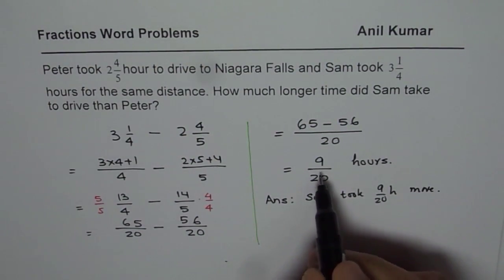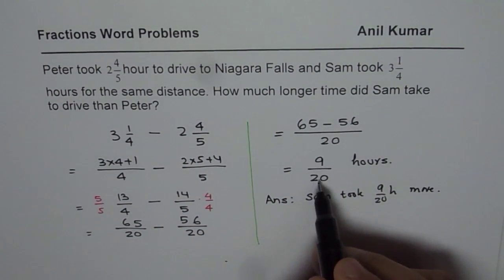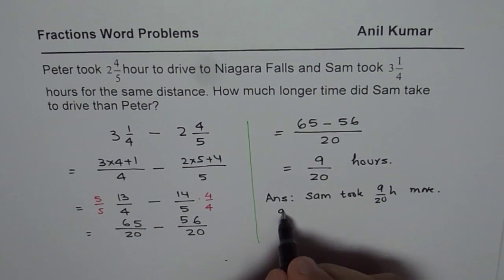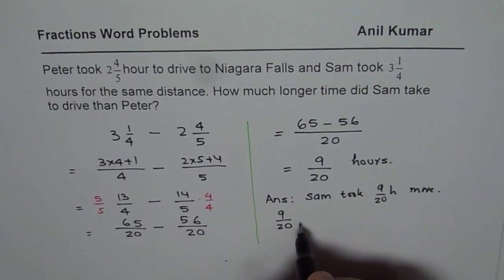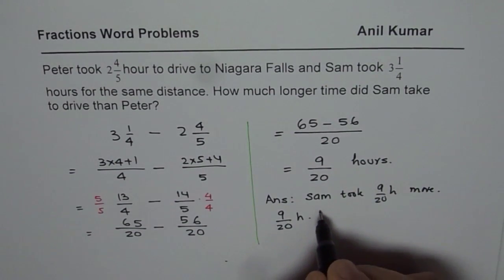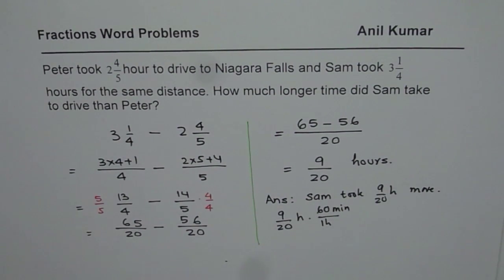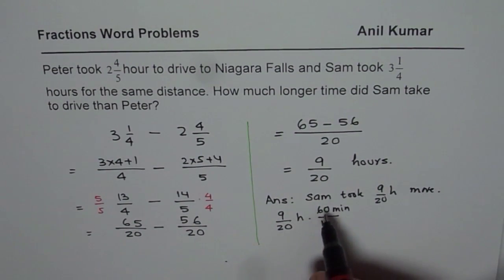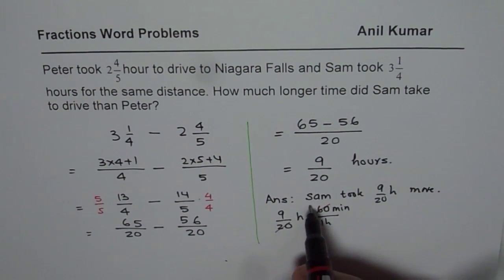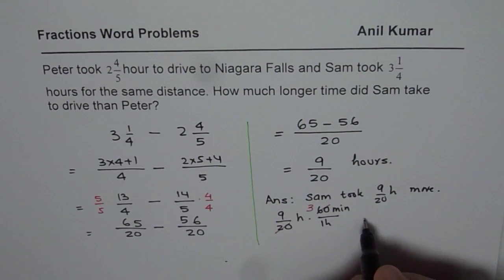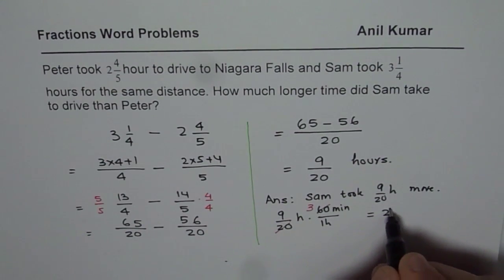At times we may be required to convert to minutes, and that is what I am going to do now. So we will convert 9 over 20 hours to minutes. Since 1 hour is 60 minutes, we multiply by 60 minutes. You can simplify this — 20 goes into 60 three times. So 3 times 9 is 27, giving us 27 minutes.